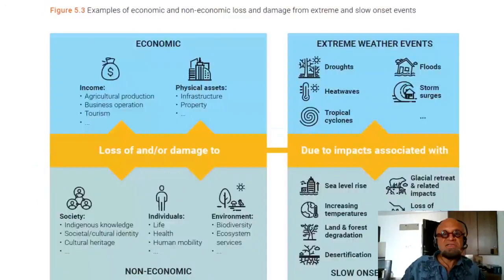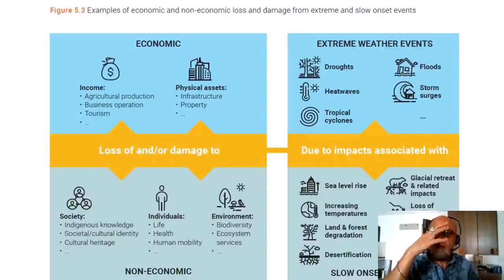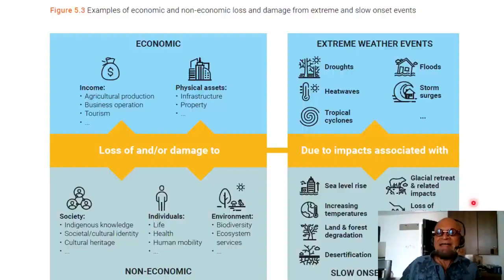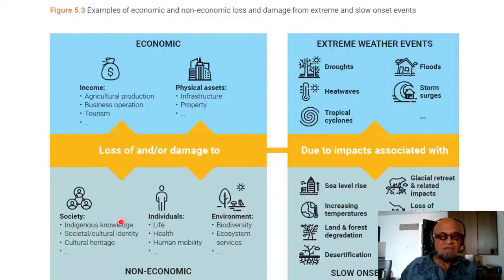COP28 will join this history shortly. Looking at examples of economic and non-economic loss and damage from extreme and slow onset or chronic events: on the economic side, agricultural production, business operations, tourism, and physical assets including infrastructure and property. Extreme weather events include droughts, floods, storm surges, heat waves, and tropical cyclones — these result in loss of and damage to both economic and non-economic assets.